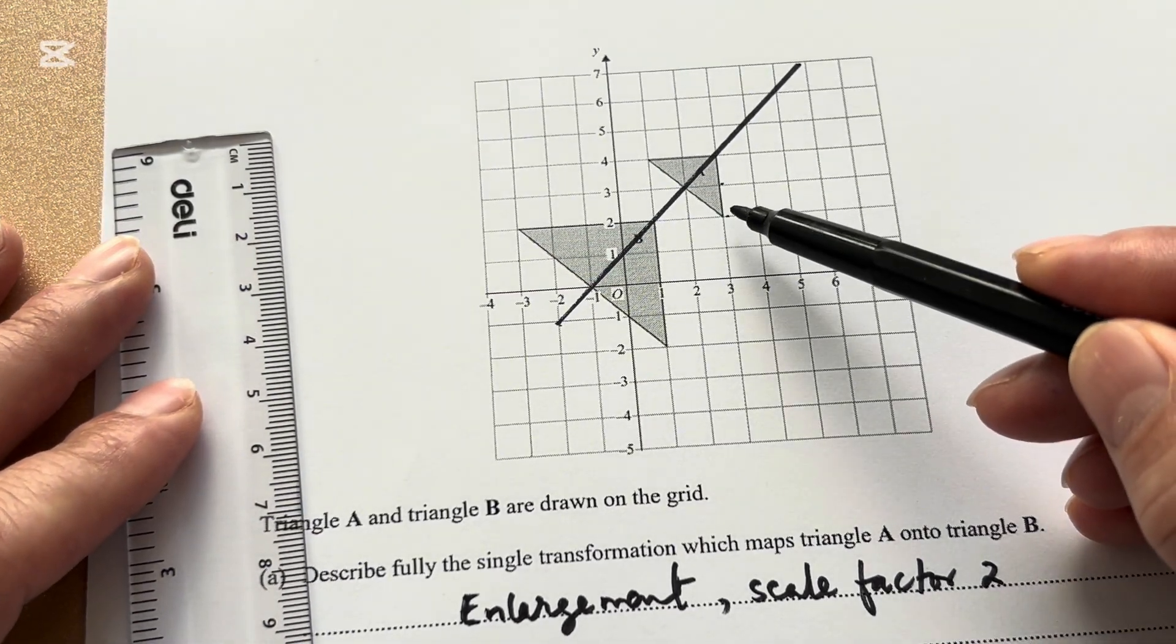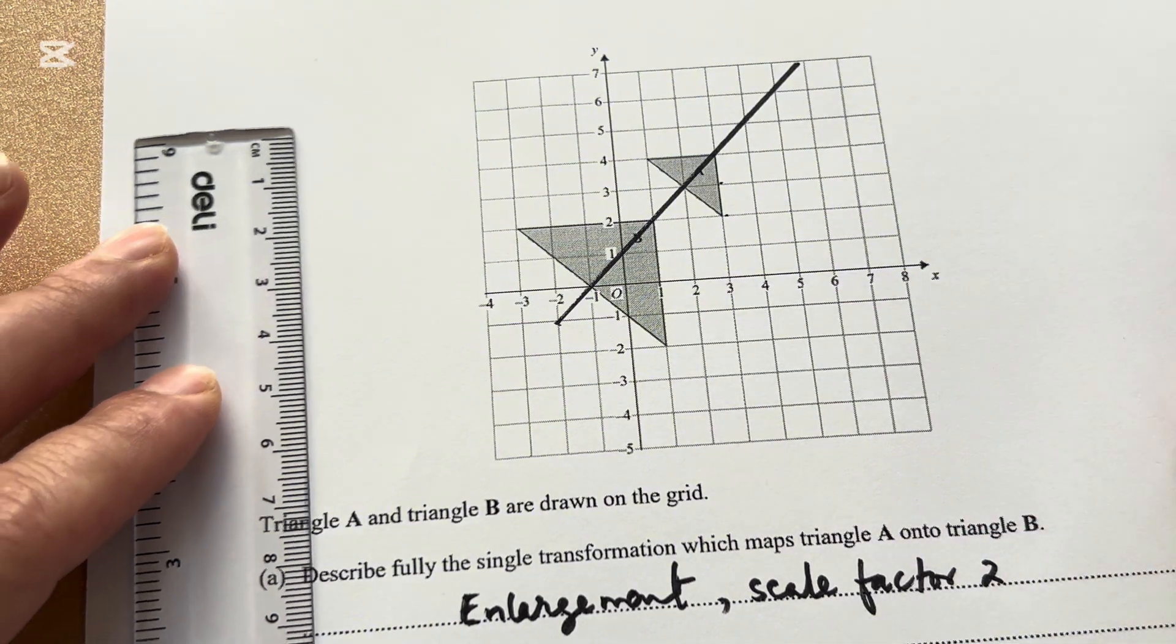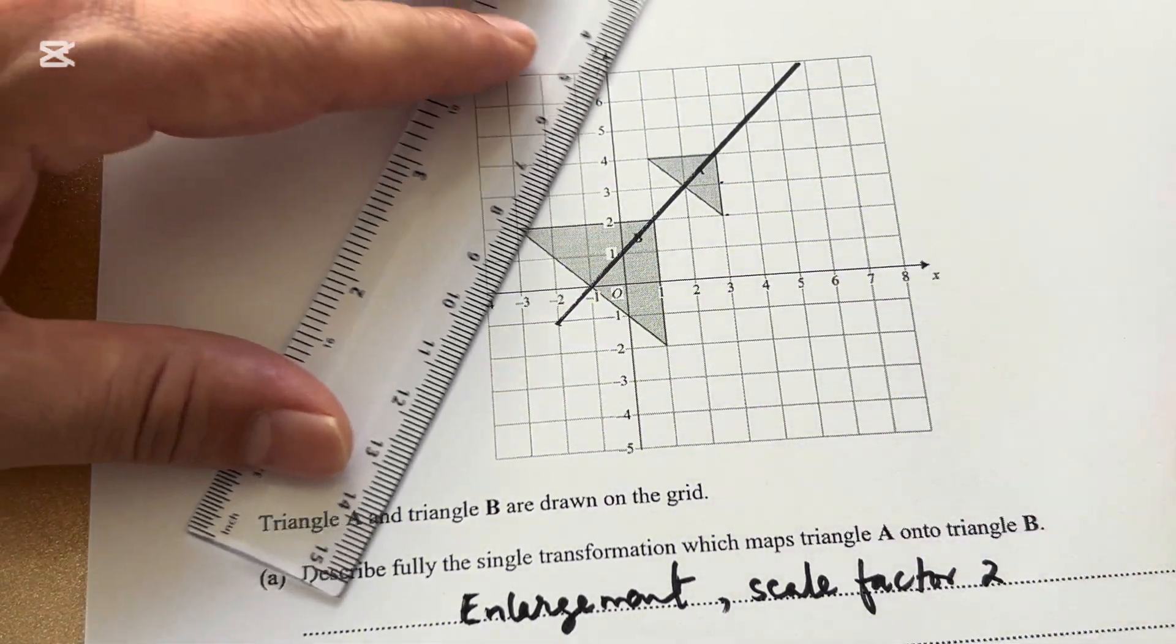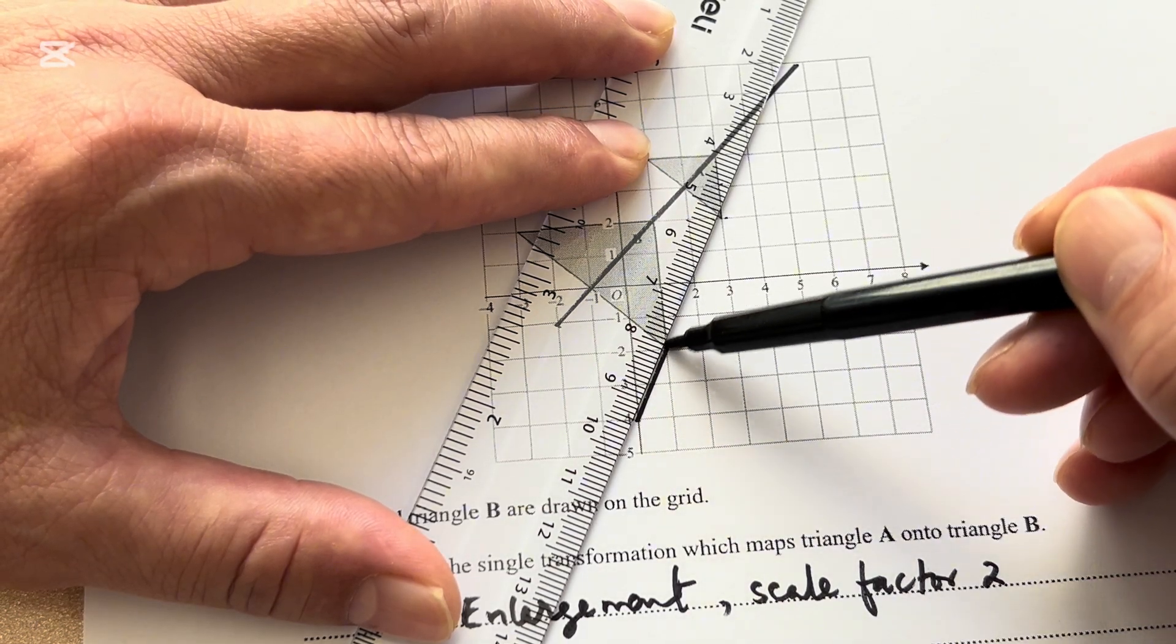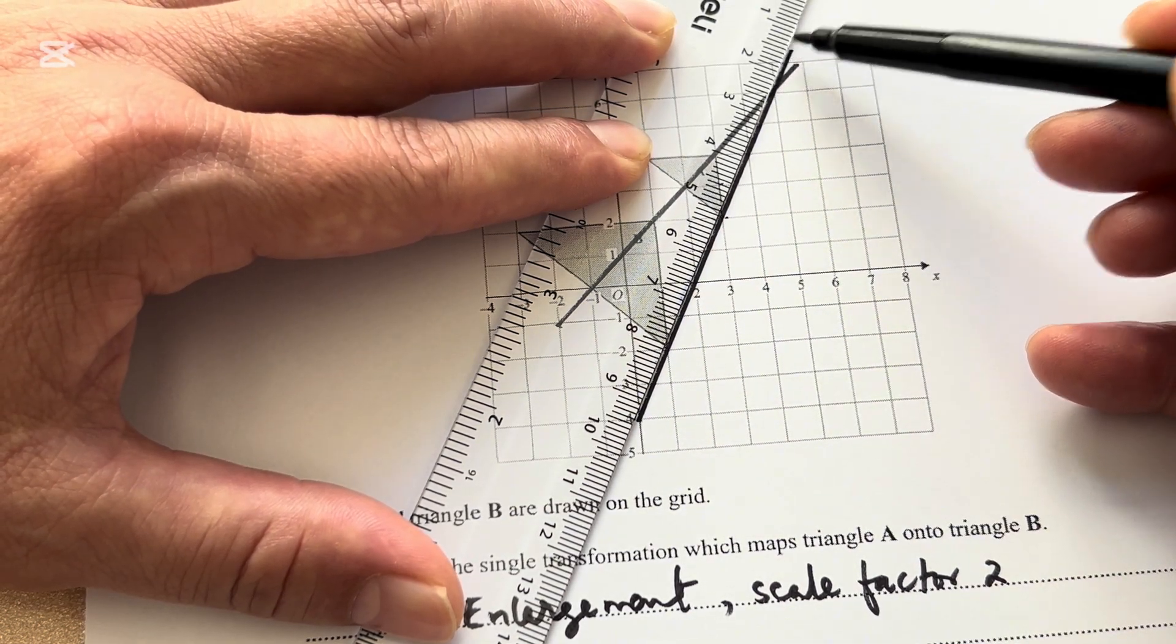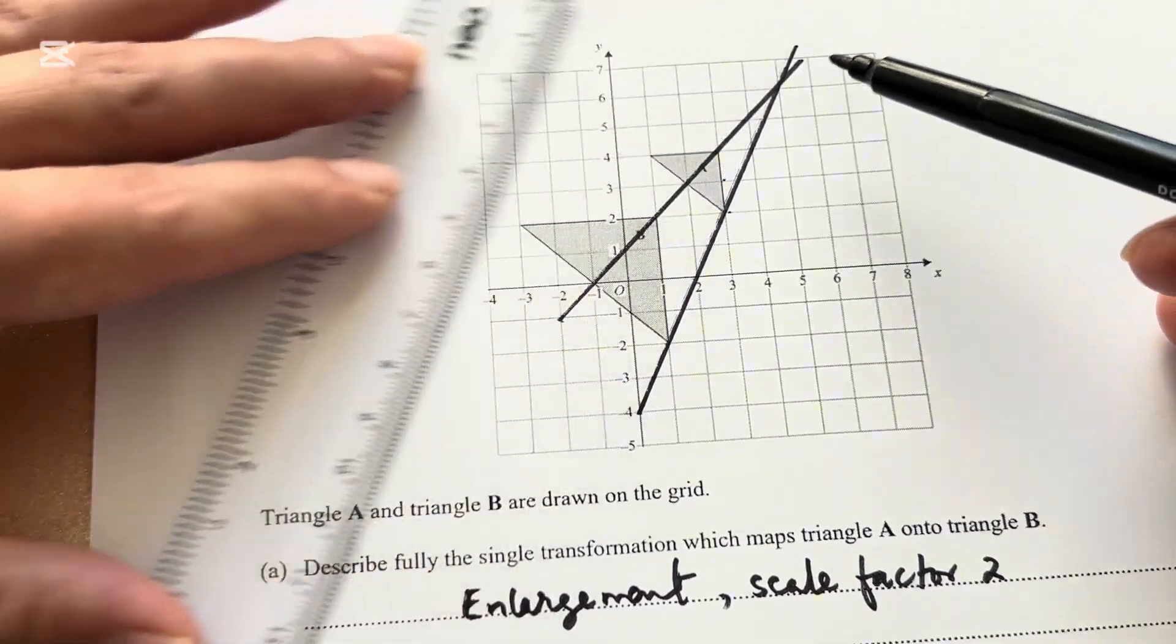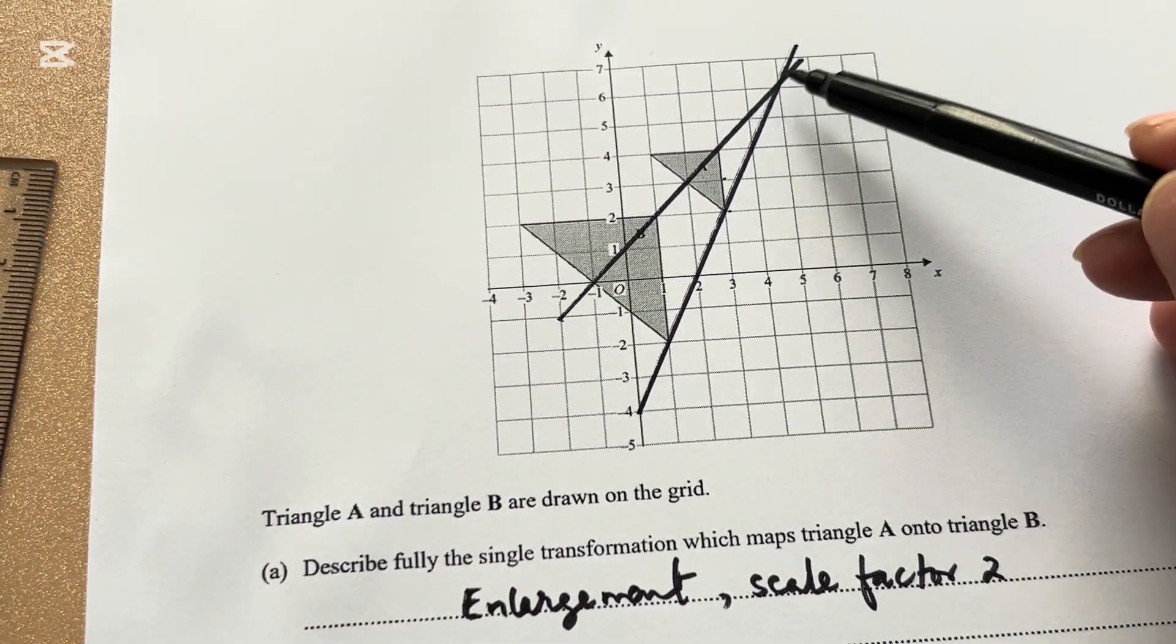Now, this vertex corresponds to this vertex. Take your ruler and draw a line. Extend till the new line meets the old line.